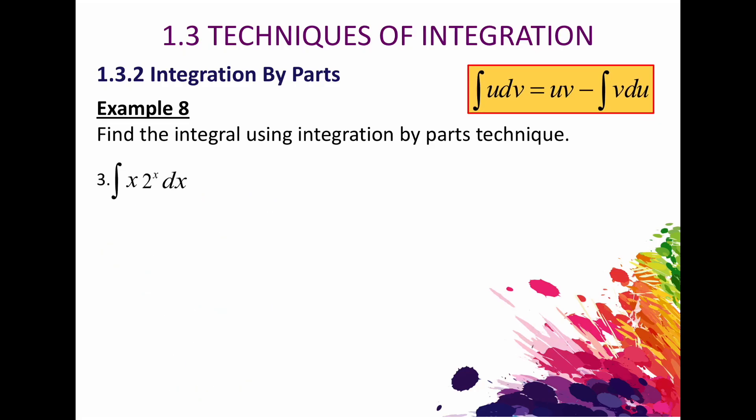Now let's try question 3. In this case we have x times 2 to the power of x. Since differentiating 2^x keeps giving the same result, and letting u equal 2^x means the power increases as we integrate x, we need to let u equal to x instead. So du/dx equals 1, and du equals dx.